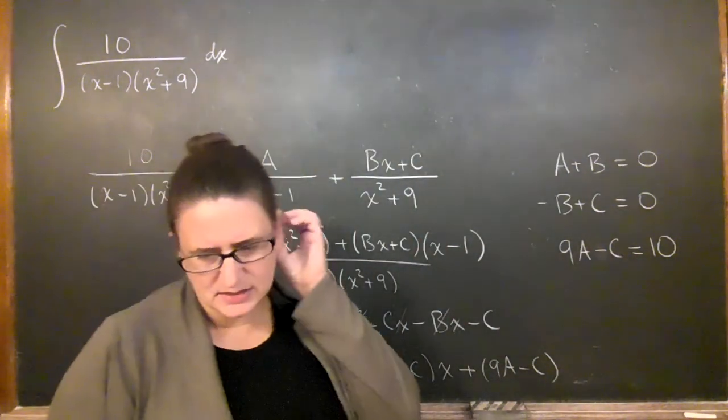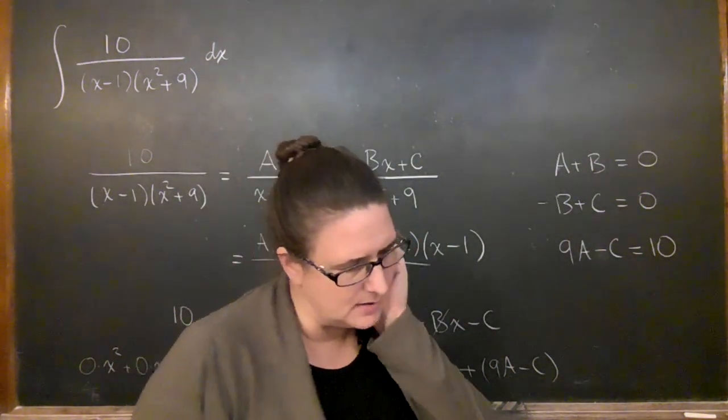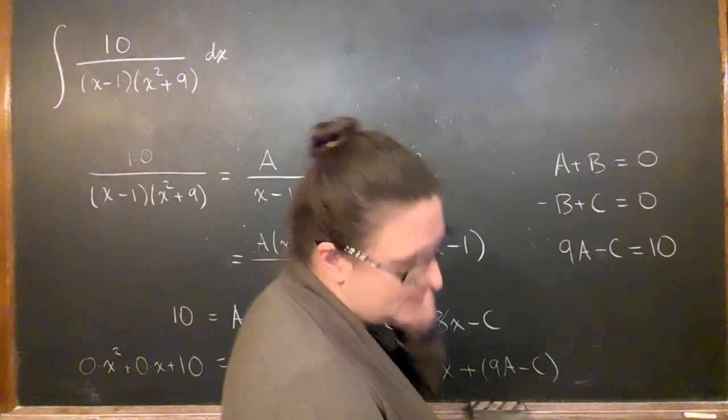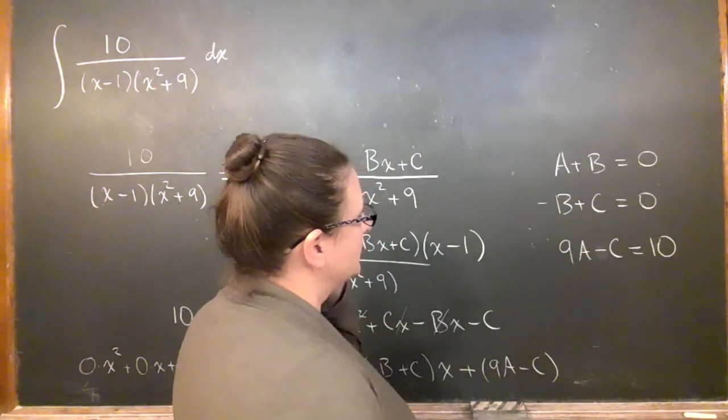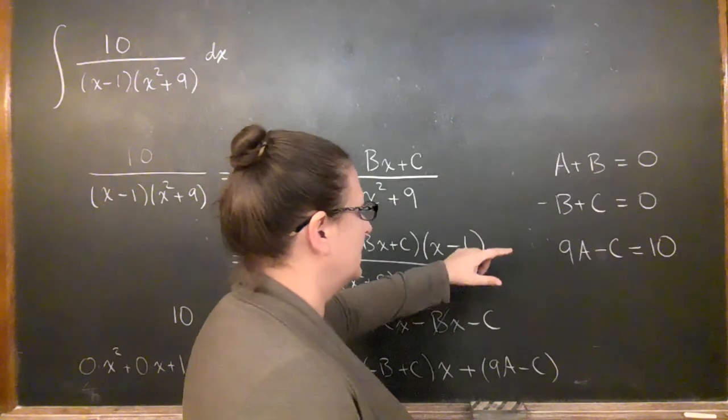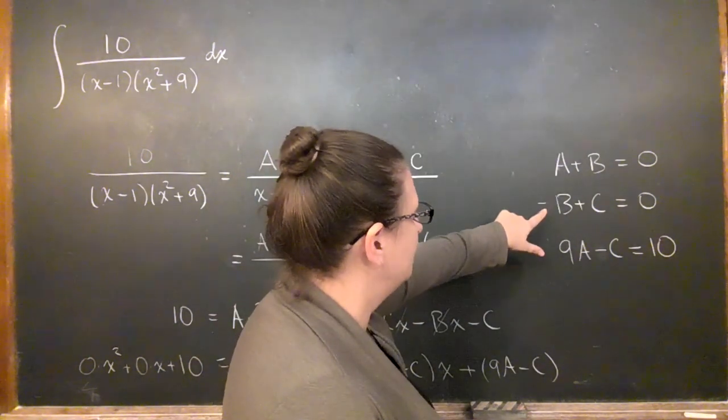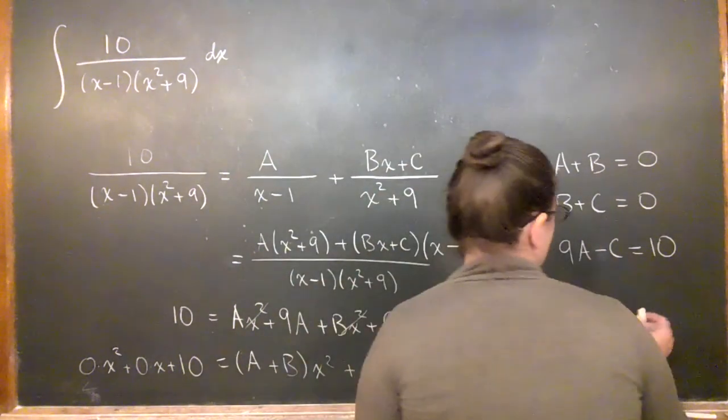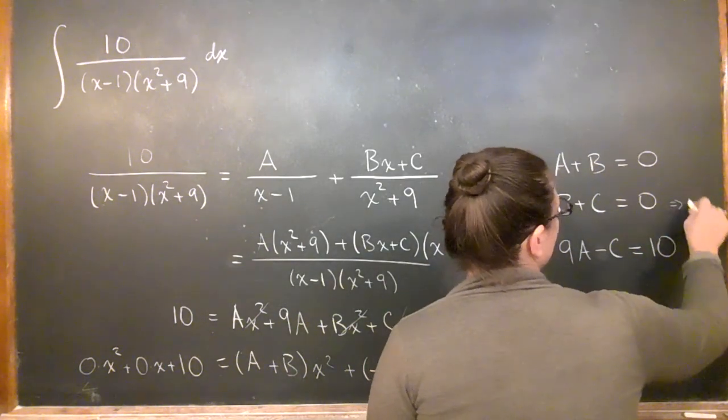Okay, so this, okay, is not that hard to solve by hand anyway. So because you can see, because these 0s make things very easy. So minus b plus c equals 0. This implies that b equals c.